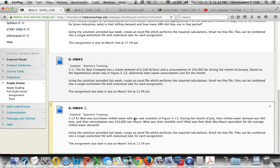All right, the next and last assignment for this week is, again, the A1 Best Company also uses chilled water. And the rate is also shown on figure 3-13. During the month of July, their chilled water demand was 385 tons. And their consumption was 250,000 ton hours. What was their monthly cost? And what was their BTU per hour equivalent for the average chilled water demand? Same rules as last week. Let's see how that comes out.